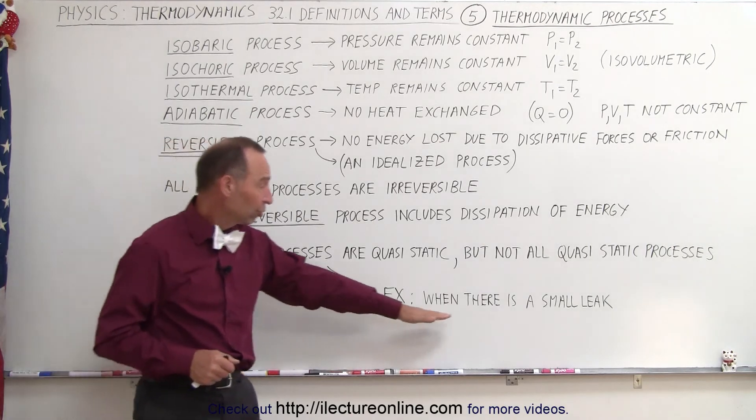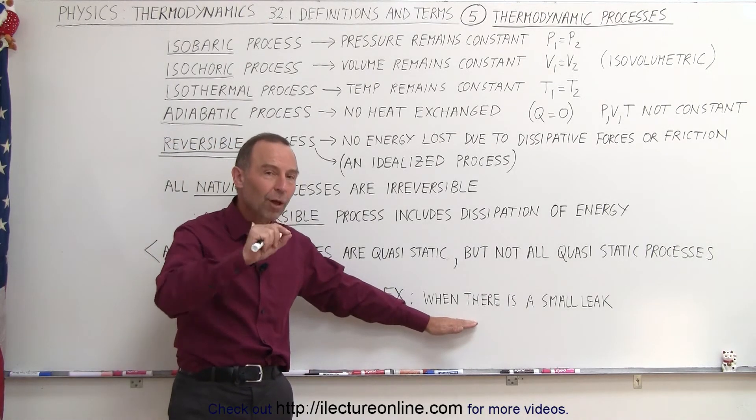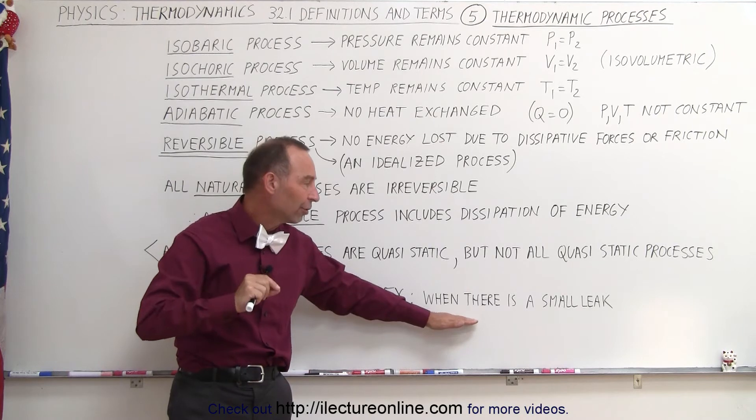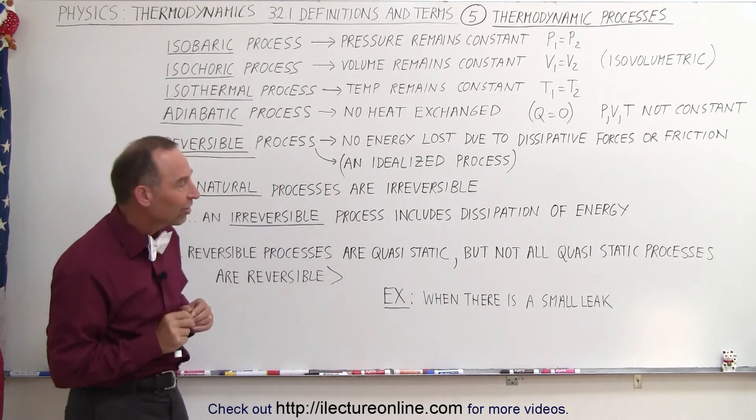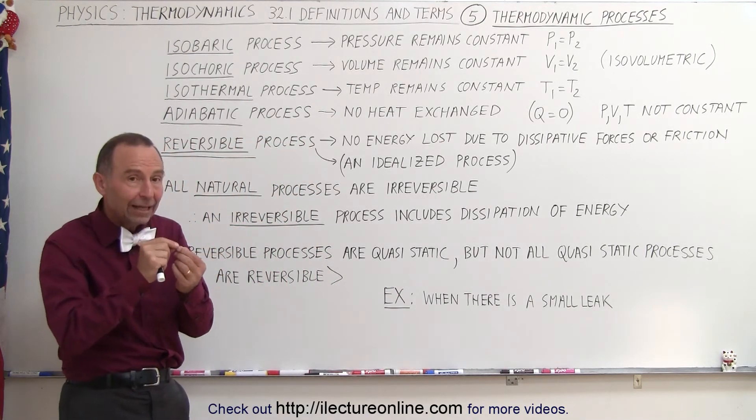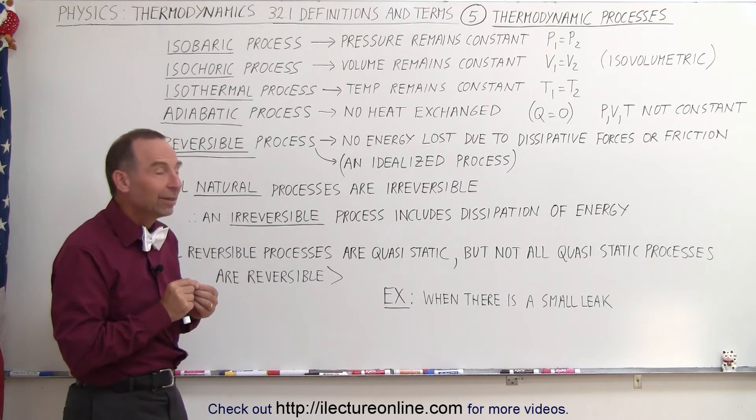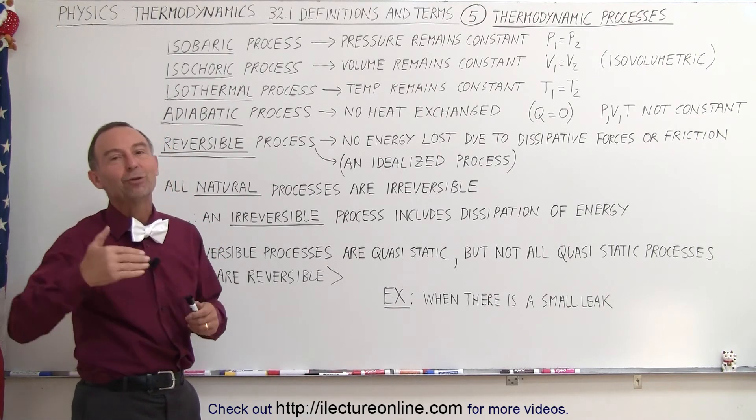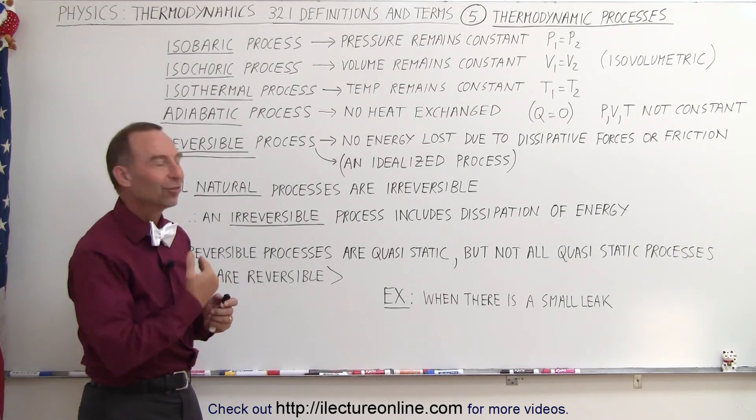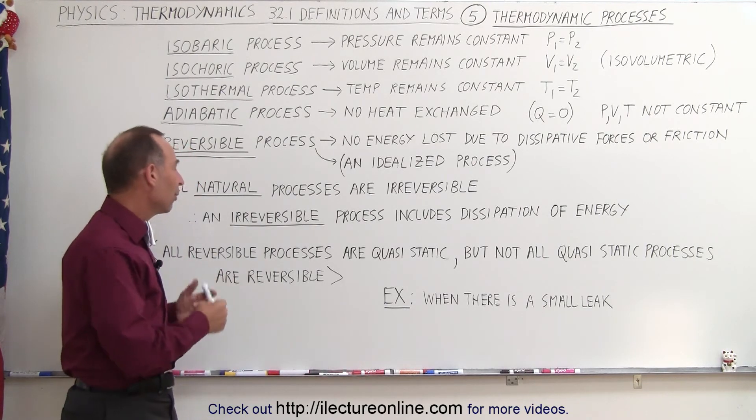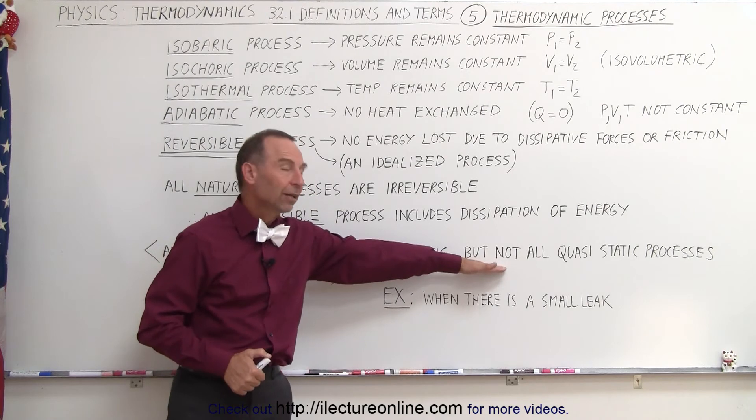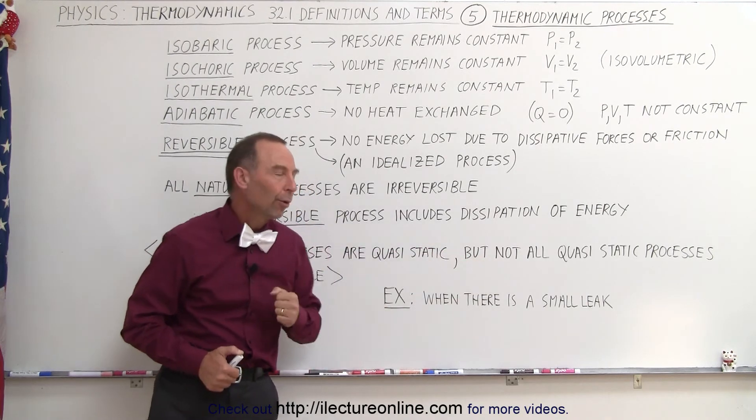For example, we could have a small leak in the container such that a small amount of gas is leaking out very slowly and at a very steady state. We can account for that as each instant there's a small amount of gas escaping, but when we want to reverse the process we have no way of putting that gas back into the container, so therefore it's not reversible but we can look at it from a quasi-static point of view.